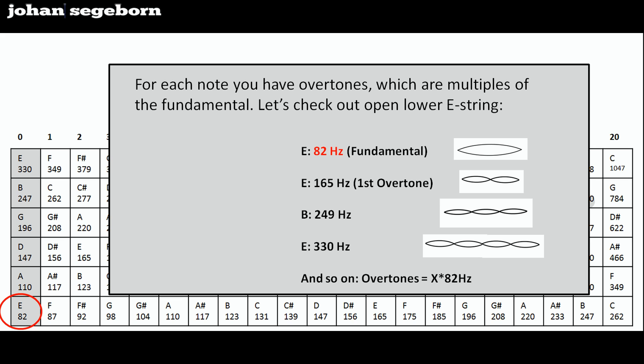Then you have the overtones. For instance, for the lower E, which has a fundamental of 82 Hertz, the overtones are multiples of 82 Hertz. So it's 165, 249, 330 and so on. With the spectrum analyzer you can see how the overtones were quieter and quieter as you moved up in frequency.